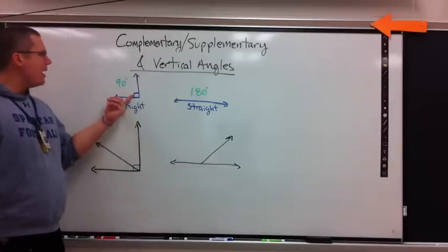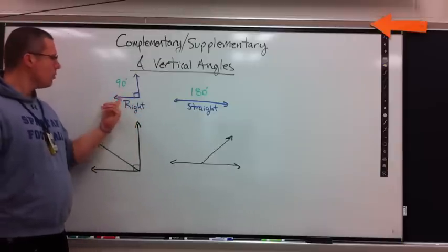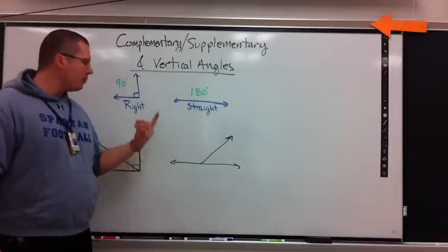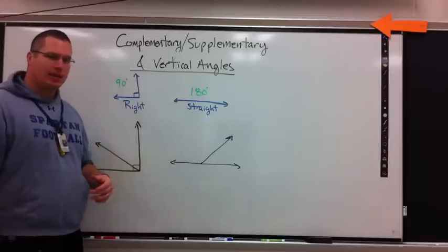Just so we remember, a right angle equals 90, right angle. A straight angle equals 180. I'm going to use these in a little bit to help tie in some things.